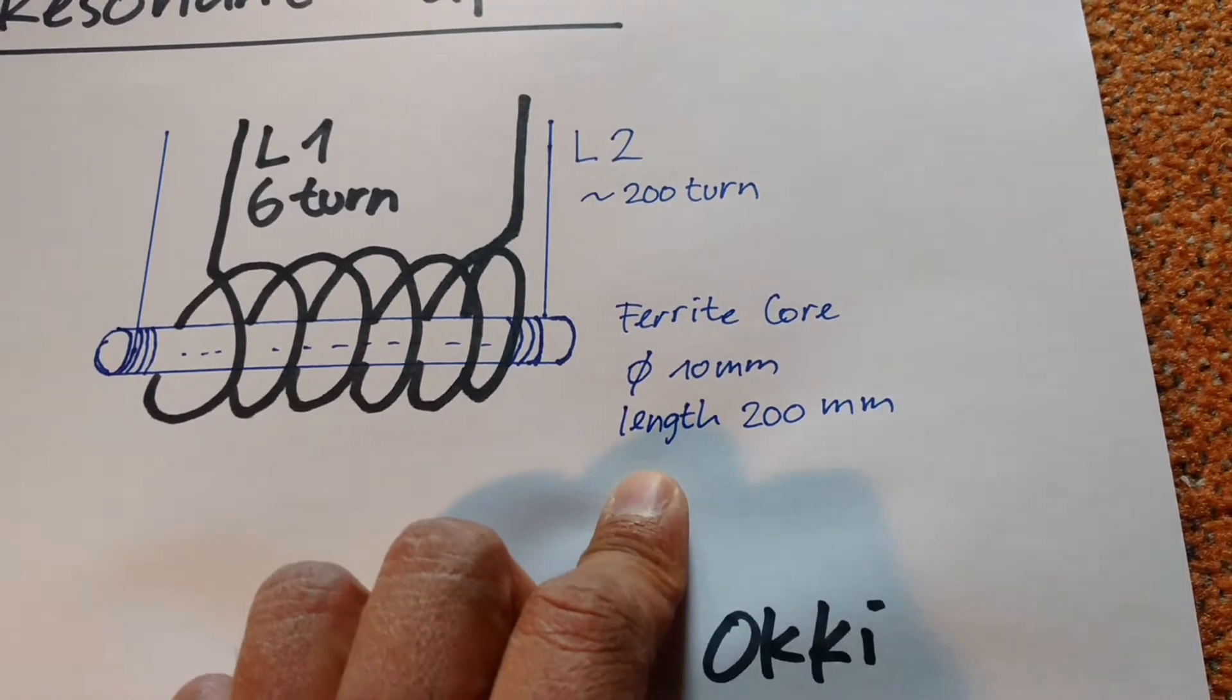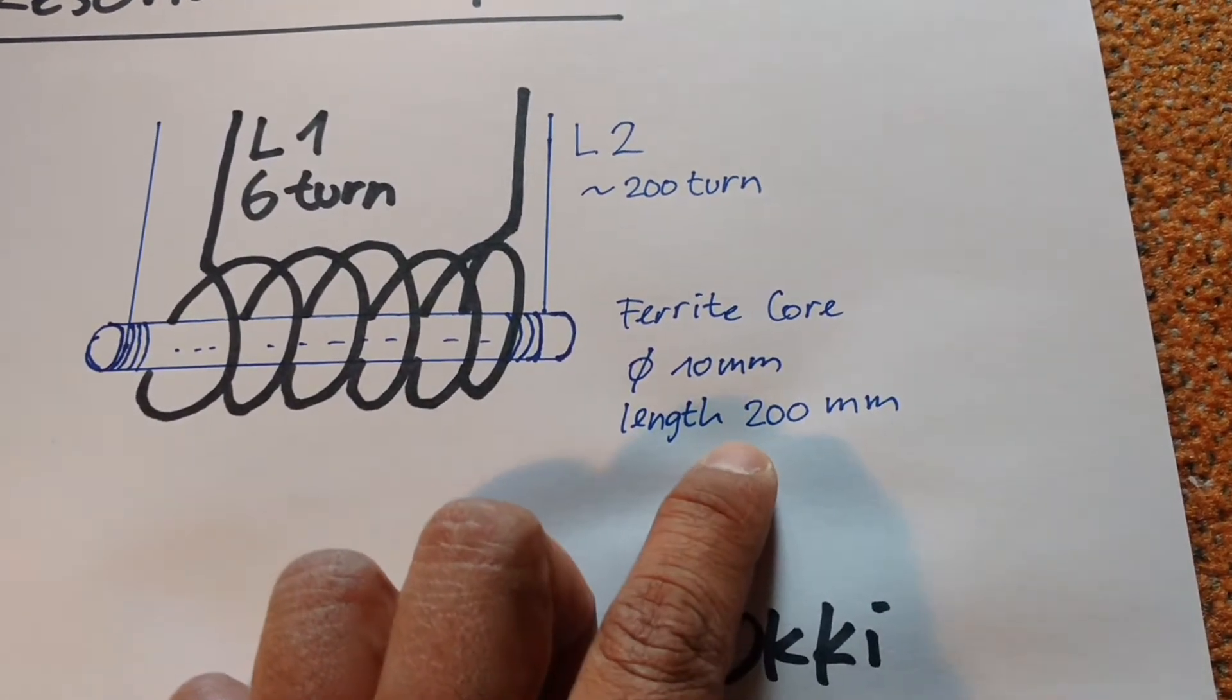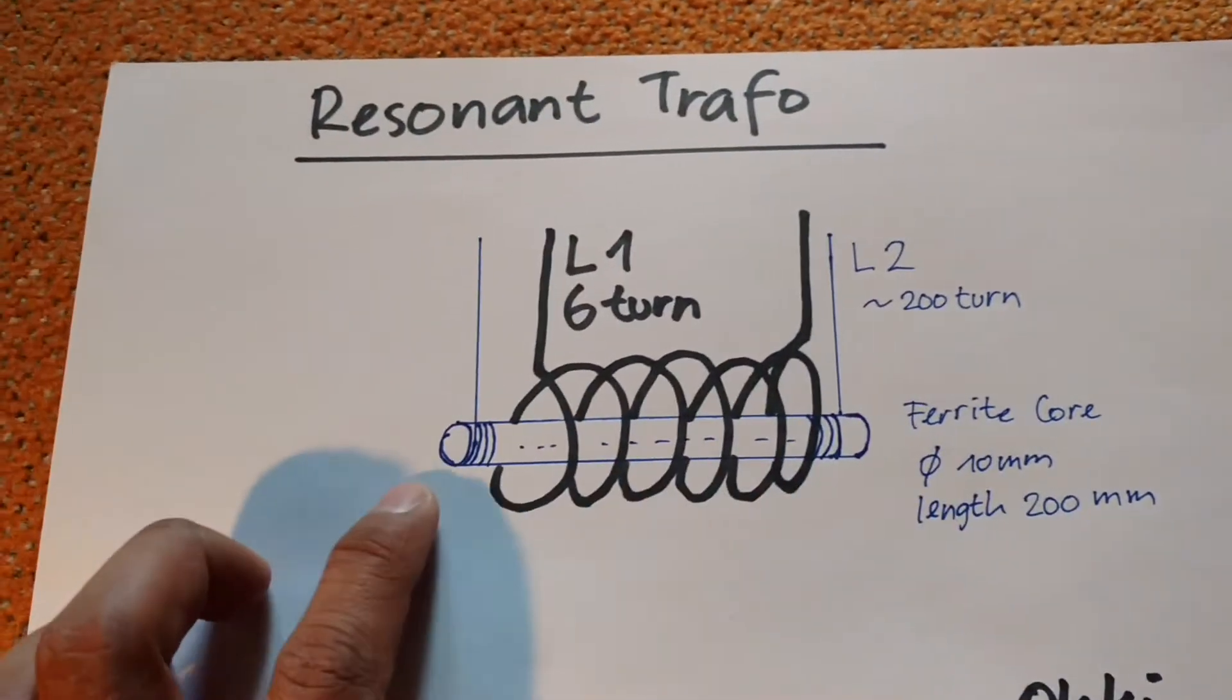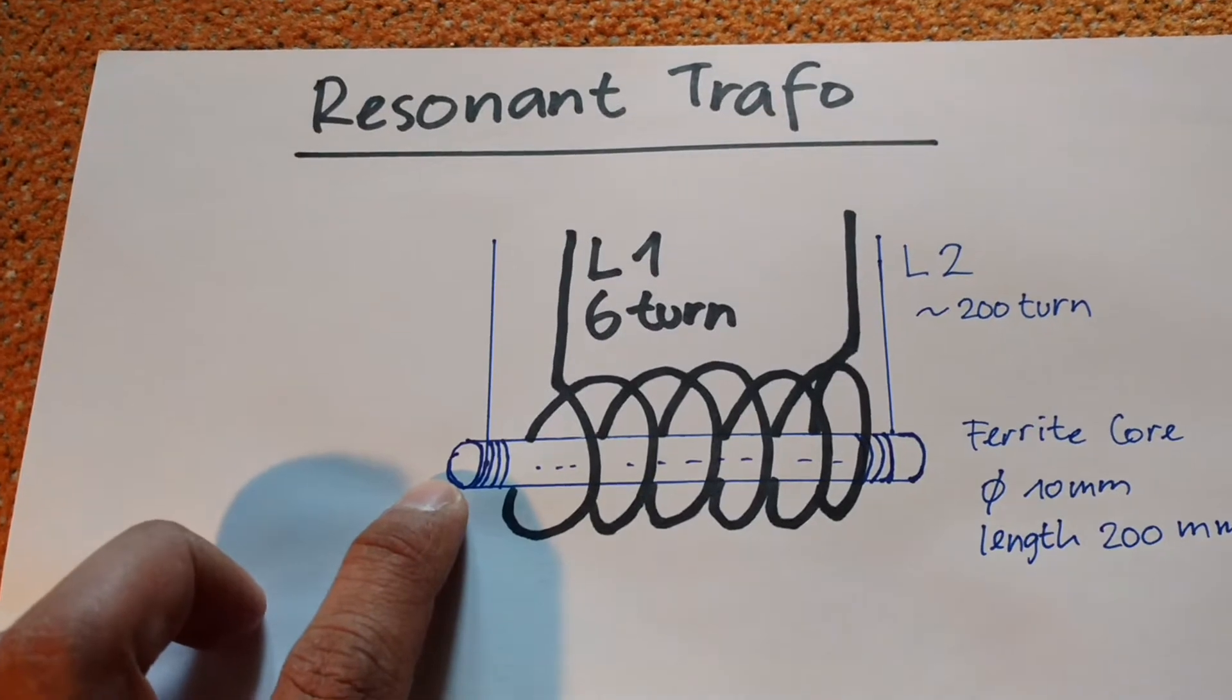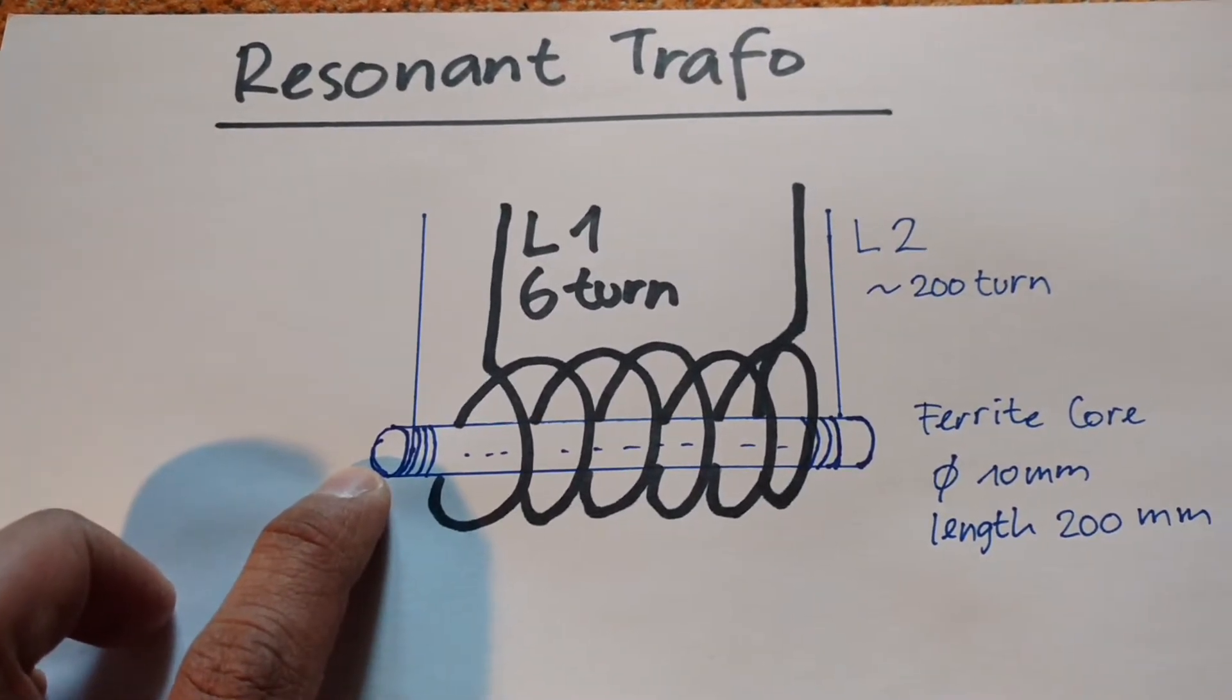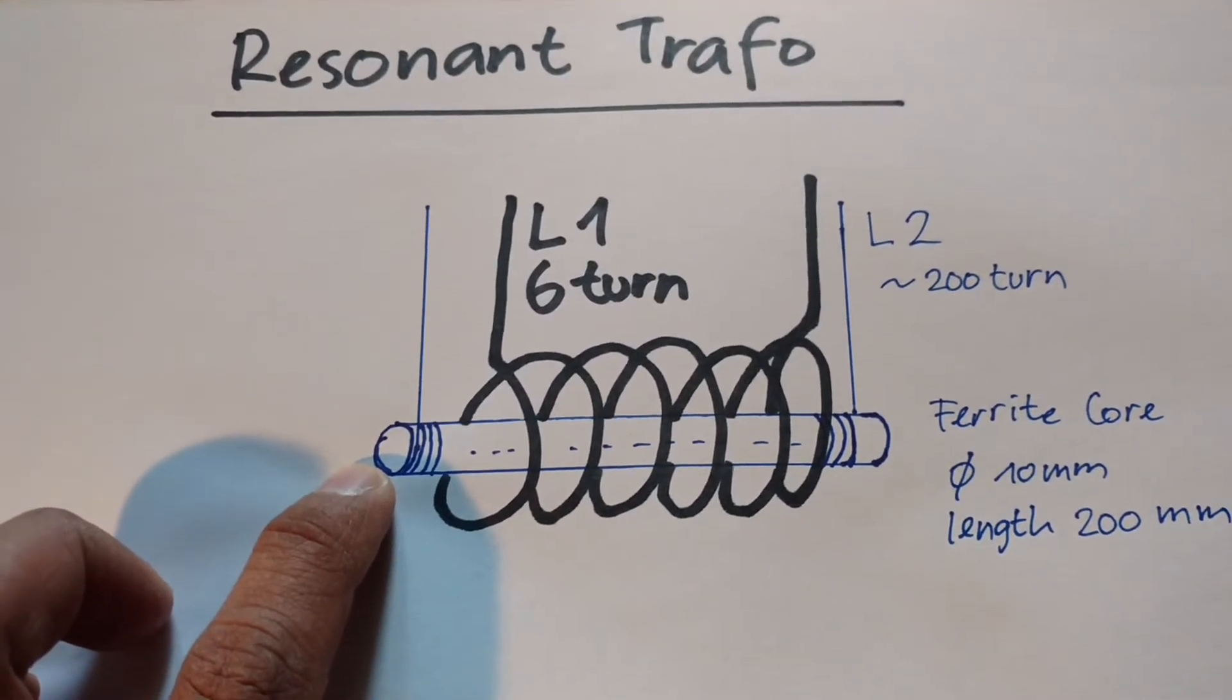And then for the L2 I use one millimeter magnet wire, and I wanted around 200 turns.